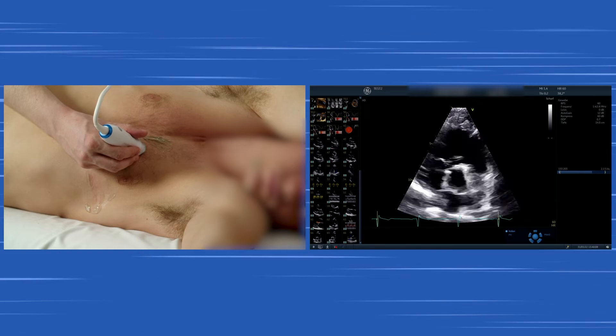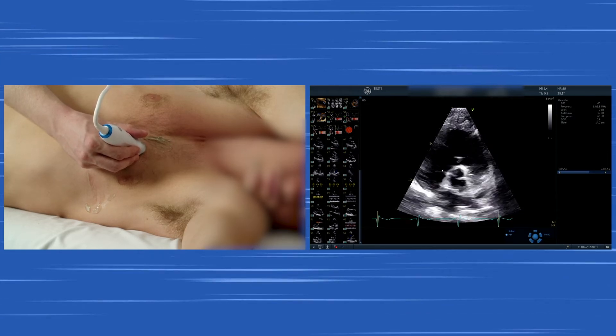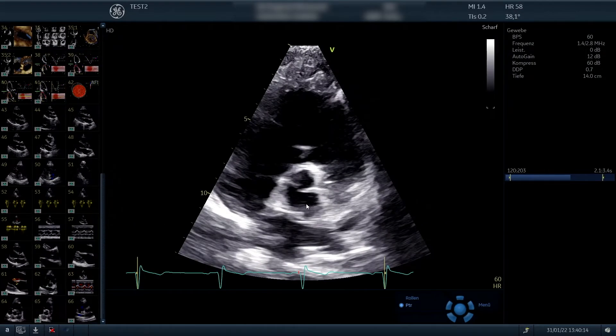Now again, we take a look at the aortic valve and see that there are three cusps. The right coronary cusp, the left coronary cusp, and the acoronary cusp. And this looks like a Mercedes star.